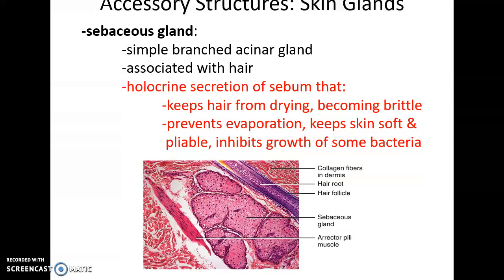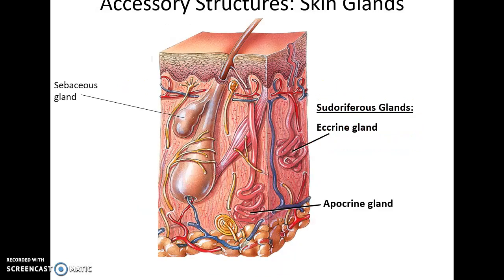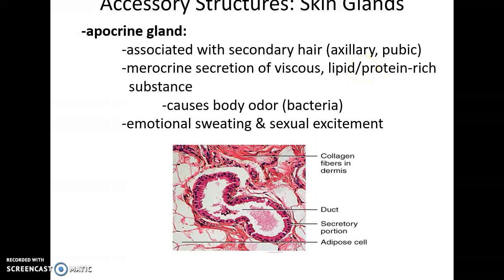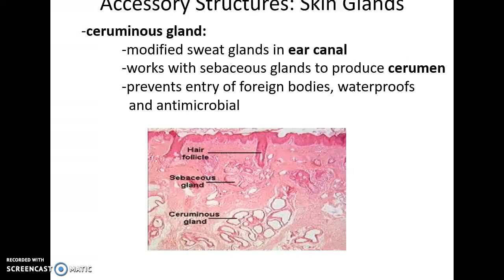Sebaceous glands secrete their oils through holocrine secretion; this oil, called sebum, helps prevent skin and hair from becoming brittle and dried out, prevents evaporation, keeps skin soft and pliable, and inhibits some bacterial growth. The sudiferous (sweat) glands include eccrine sweat glands — found in all skin — and apocrine sweat glands, found only where secondary hairs are present (pubic or armpit hair). Eccrine glands secrete sweat through merocrine secretion (exocytosis), important for thermal regulation. Apocrine glands produce a viscous substance that is metabolized by bacteria, causing body odor. Ceruminous glands in the ear canal produce cerumen, which mixes with sebum to produce a waterproof sealant that protects the ear canal.